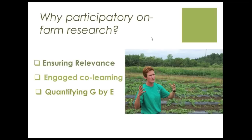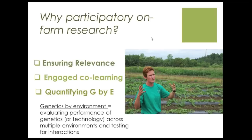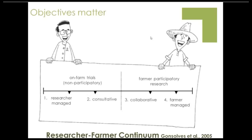I'm going to talk about quantifying G by E. Plant breeders have been working on genetics by environment interactions for a long time. You can think of it as trialing varieties or looking at different technologies, such as different types of tillage, and how they perform in different environments — not just the biophysical climate, which obviously varies from farm to farm, but also the socioeconomic and market context. There are specific statistical approaches you can use to try and quantify this interaction.